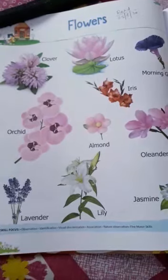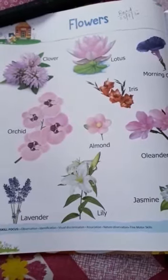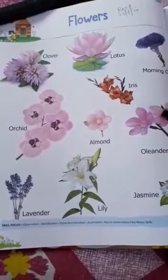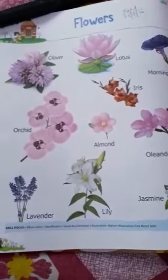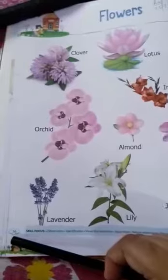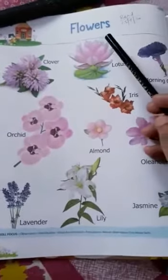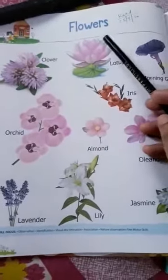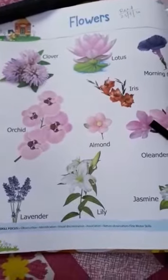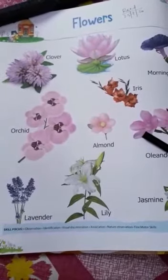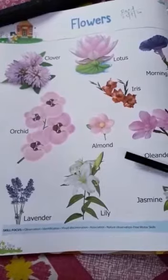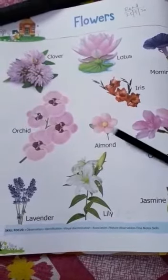Hello children, welcome to your general awareness class. Open your general awareness book and open page number 56. That is flowers. Today we will learn about different types of flowers. Let's see the pictures and try to learn the names of these flowers.